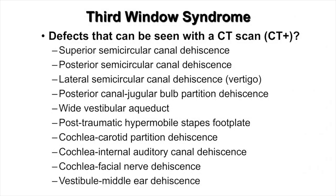There are currently 10 known sites where a third window can be created as seen on CT scan. Superior semicircular canal dehiscence is the most common. Others include posterior semicircular canal dehiscence, lateral semicircular canal dehiscence, posterior canal jugular bulb partition dehiscence, wide vestibular aqueduct, post-traumatic hypermobile stapes footplate as described by Arun-Gadra, cochlea carotid partition dehiscence, cochlea internal auditory canal dehiscence, cochlea facial nerve dehiscence, and the recently described vestibule middle ear dehiscence.